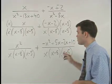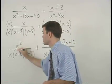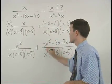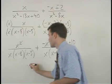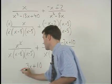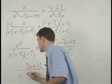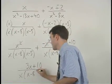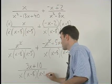So adding across the numerators our x squared cancel and we have 3x plus 10 over x times x minus 8 times x minus 5.